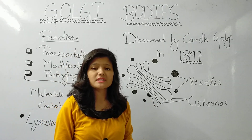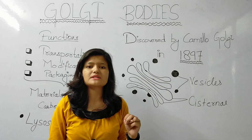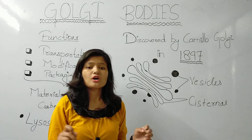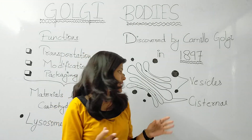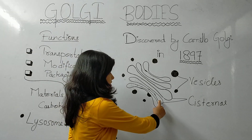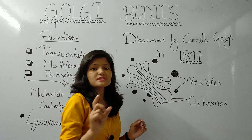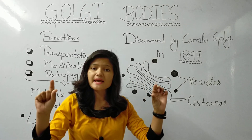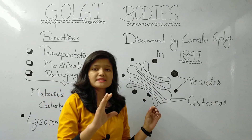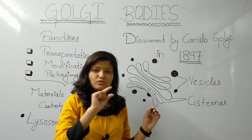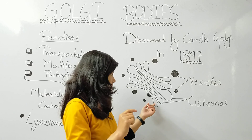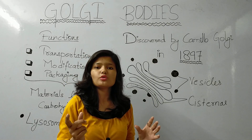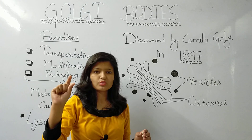Now we have to study the structure. The structure has two components. The first is the cisternae system. These are flattened sac-like structures. They are flat, round, with an interior space called the lumen. They are narrowed at the edges.